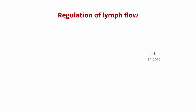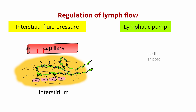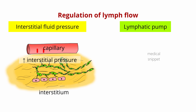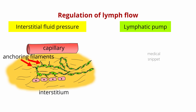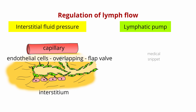What regulates this lymph flow? This can be summarized into two factors: interstitial fluid pressure and activity of the lymphatic pump. When more fluid accumulates in the interstitial spaces, the interstitial pressure increases, causing tissue to swell. The anchoring filaments attached to the endothelial cells of the lymphatic capillaries move apart, allowing the excess fluid to enter the lymphatic capillaries. Once entered, the fluid cannot re-enter the interstitium due to the overlapping arrangement of the lymphatic capillary endothelium, as it acts as a flap valve.